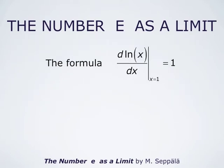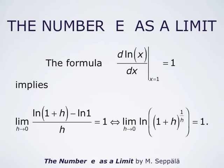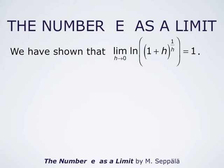In particular, the derivative of the natural logarithm of x evaluated at x equals 1 is 1, because it is 1 over x and substituting x equals 1 gives 1. So we have the formula: the derivative of ln of x at x equals 1 is 1. This means that the limit as h approaches 0 of ln(1 plus h) minus ln(1), divided by h, is 1. And this means that the limit as h approaches 0 of ln of (1 plus h) raised to the power 1 over h, is 1.